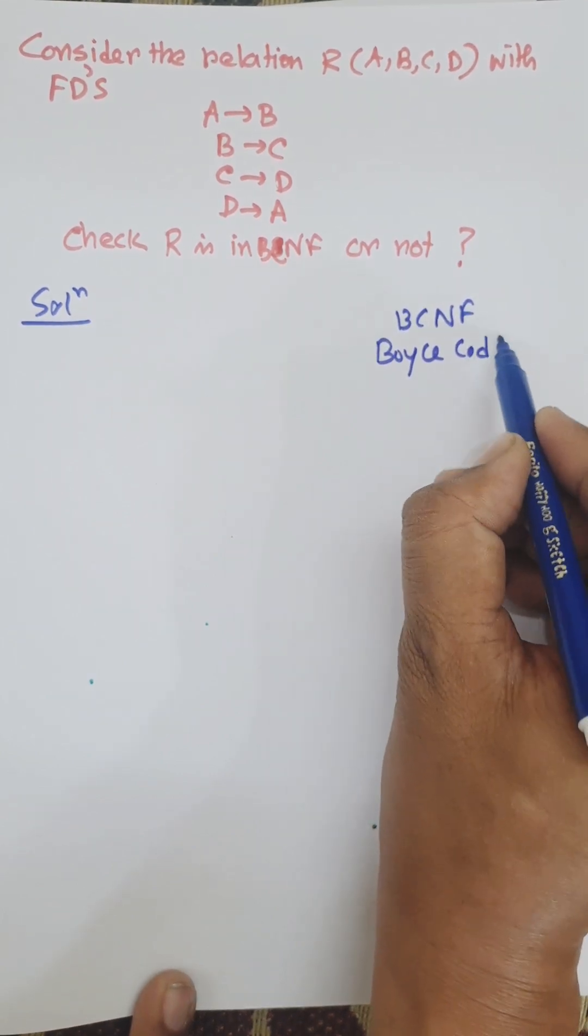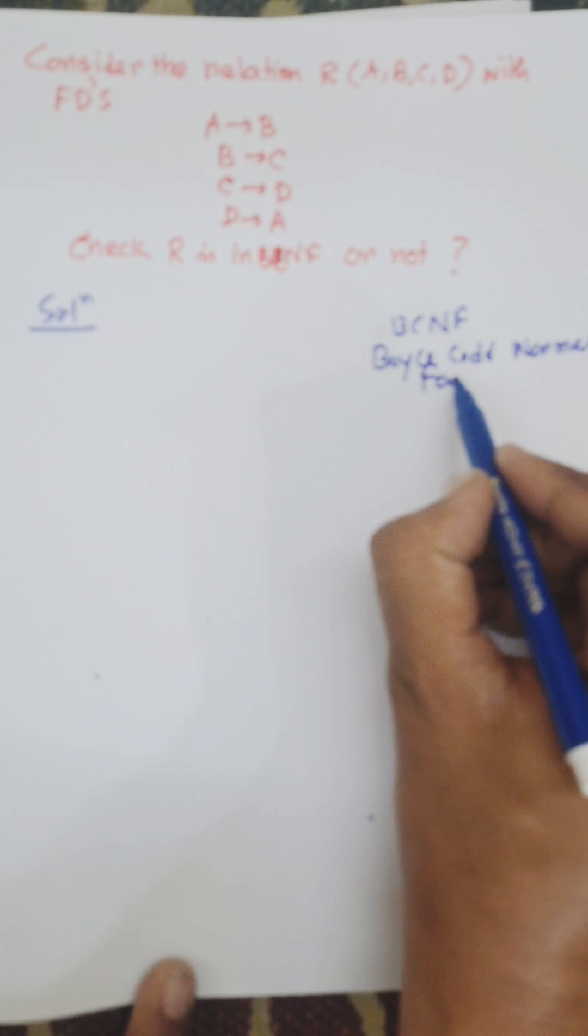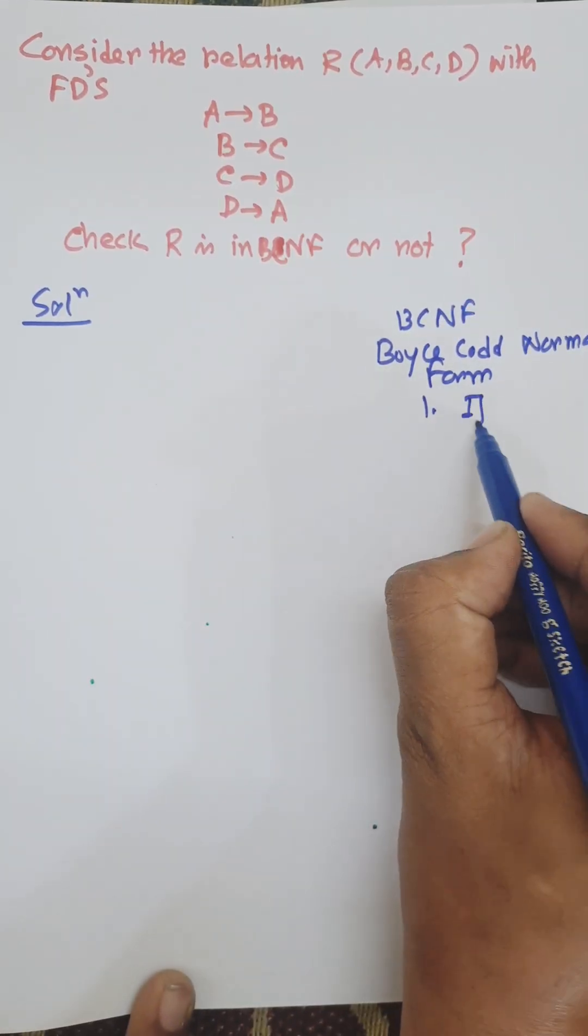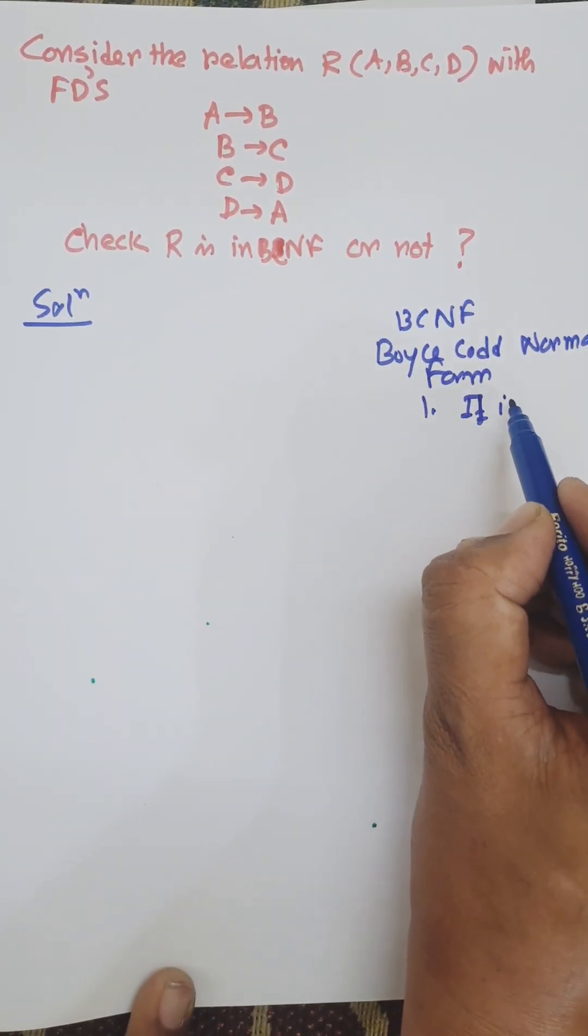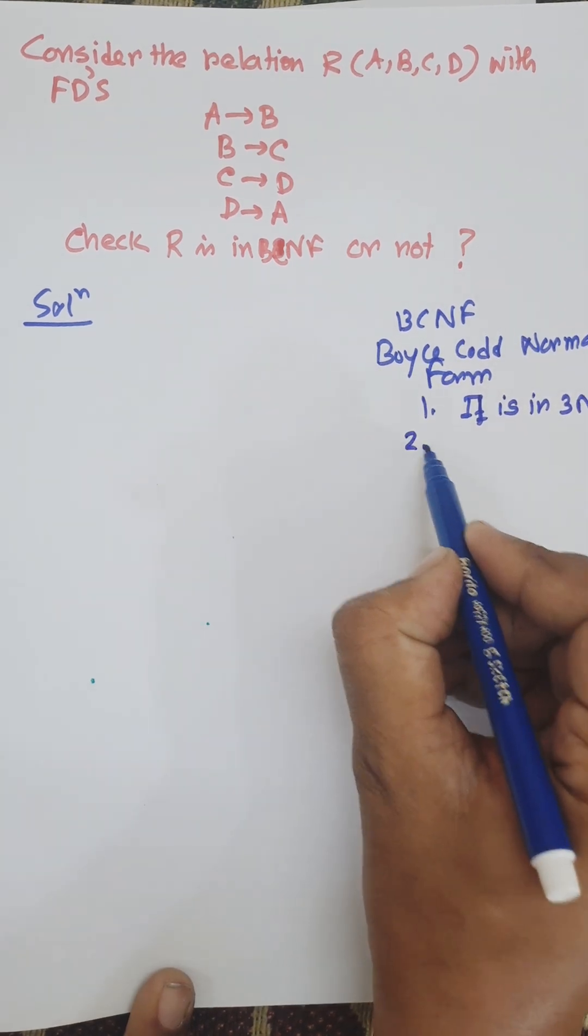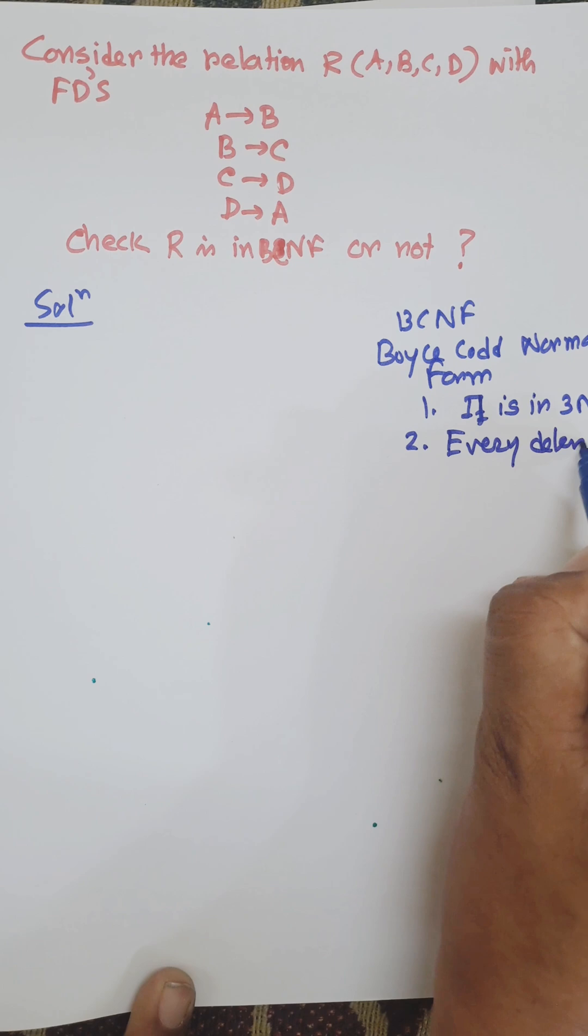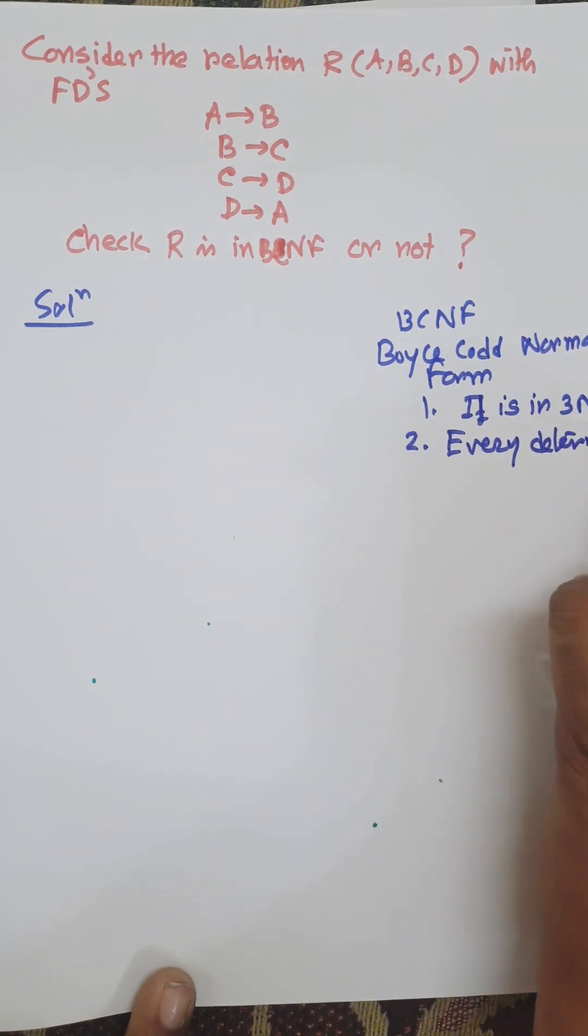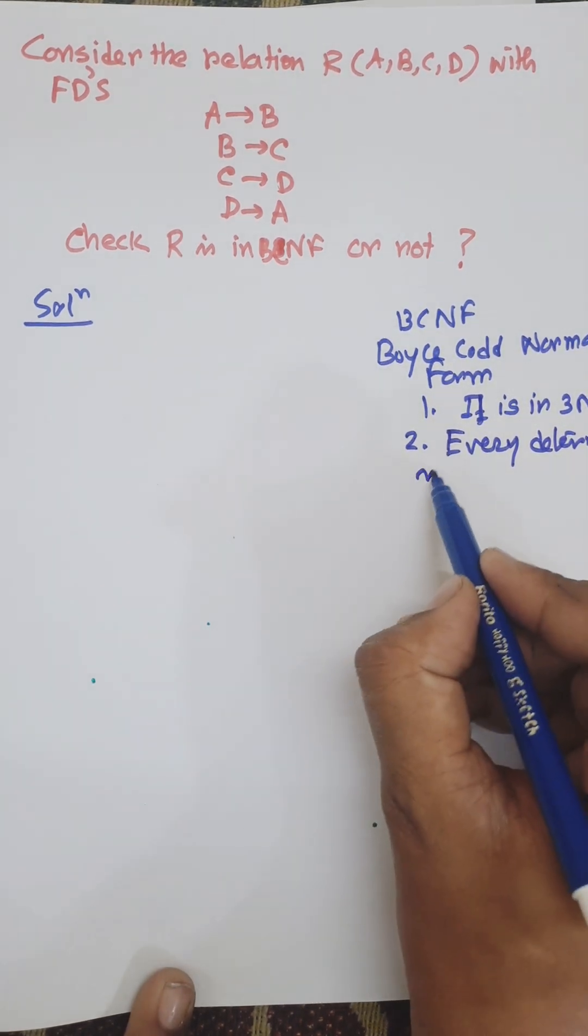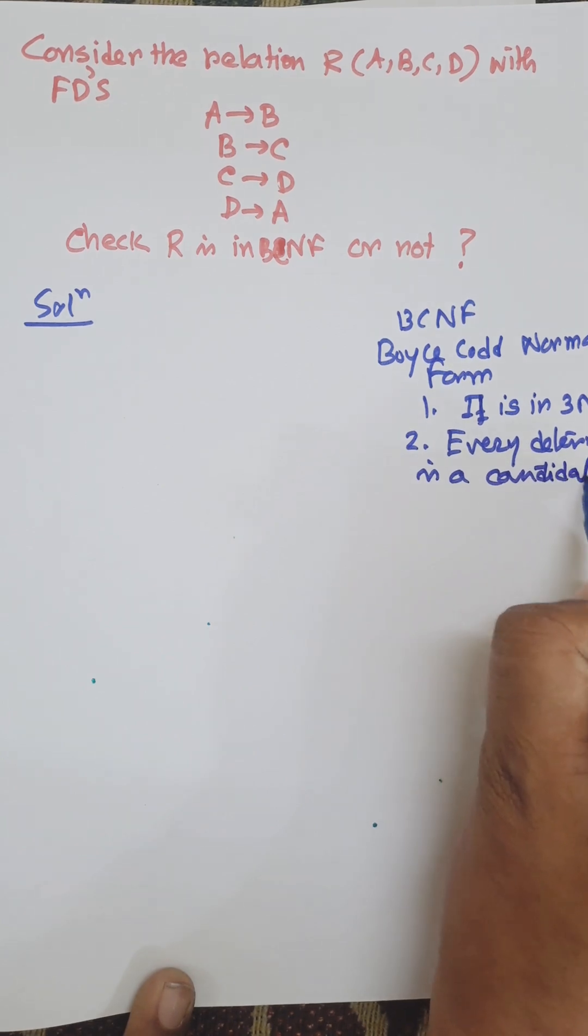Boyce-Codd Normal Form satisfies the following rules: Rule 1 - it is in third normal form, and Rule 2 - every determinant is a candidate key.